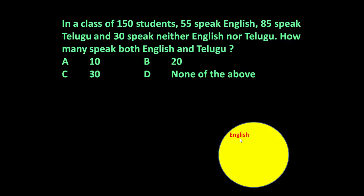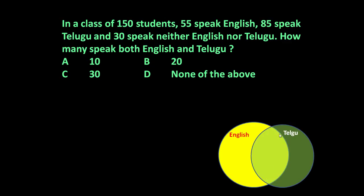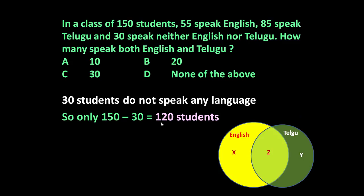This circle represents students who speak English, and this circle represents those who speak Telugu. The yellow portion represents only English speakers, green represents only Telugu speakers, and the common section represents those speaking both English and Telugu. If X students speak only English, Y speak only Telugu, and Z speak both — an important point: since 30 students speak neither, only 120 students are under consideration.